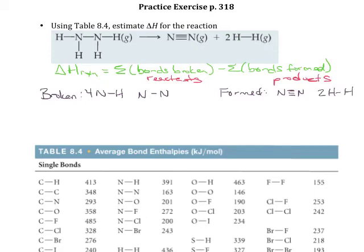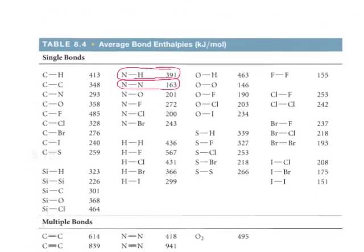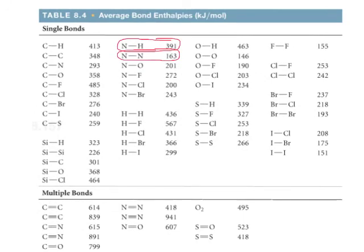All that's left is to look up these values in the chart. I need to find the nitrogen-hydrogen bonds, which are here, then the nitrogen-nitrogen single bonds, which are down here. To find the nitrogen-nitrogen triple bond, I go to the next section and I can see that has an energy of 941 kilojoules. The last one I need is the hydrogen-hydrogen single bond, which is back up here at 436.